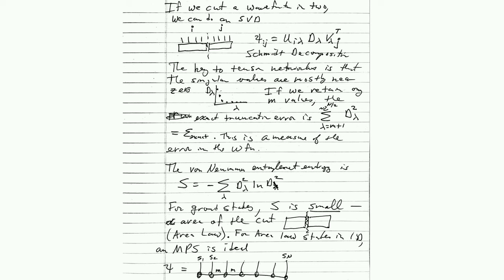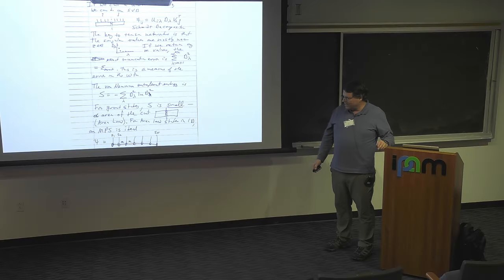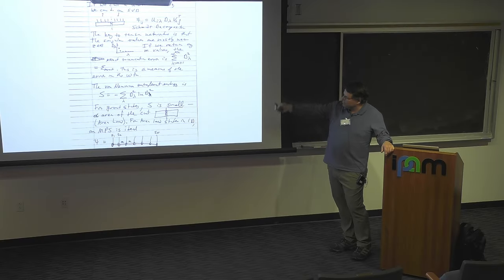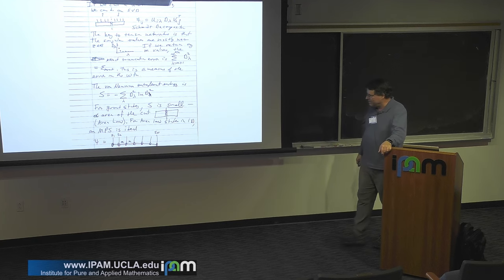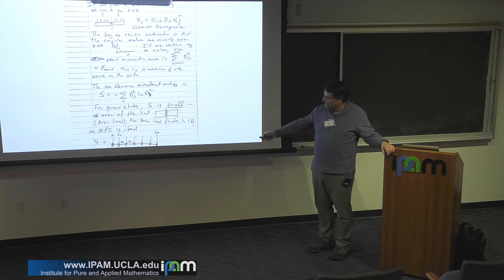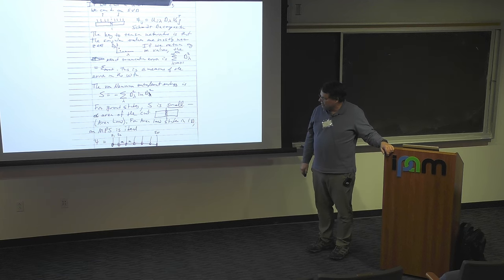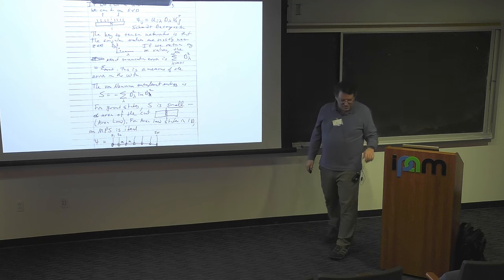If you're looking at a one-dimensional system, the area is just a point, so the area law says our entanglement is essentially a constant. This procedure works very well, and DMRG is based on that. You can think of a matrix product state as arising from this cut between the two sides of the system, keeping M states being done between all bonds of the system. In the end you end up with tensors with three legs — that structure is a matrix product state.